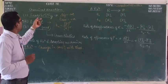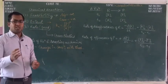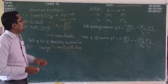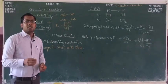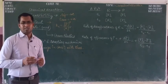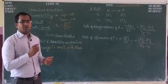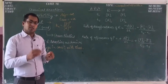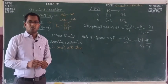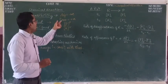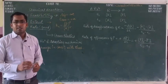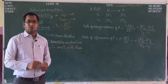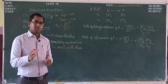Our first problem is feasibility — whether the reaction is spontaneous or not. From thermodynamics, we know that if the value of delta G is negative for a reaction, then the reaction is spontaneous and feasible. Or if there is an electrochemical reaction and the E cell value is positive, then that reaction is also spontaneous and feasible.